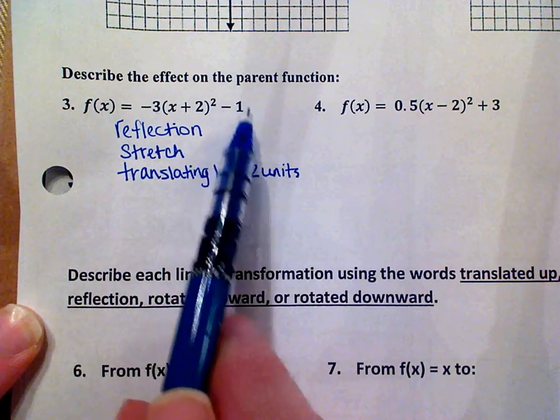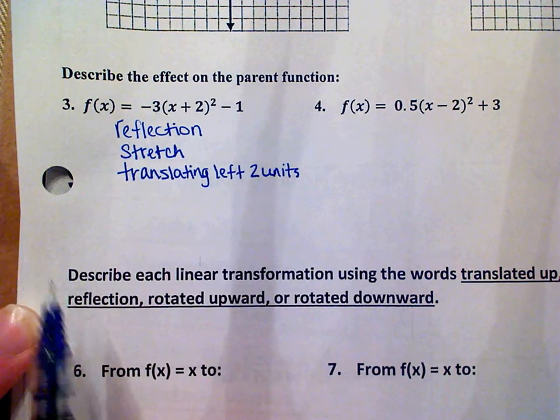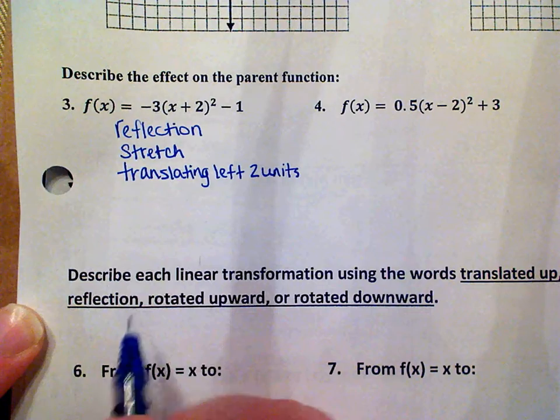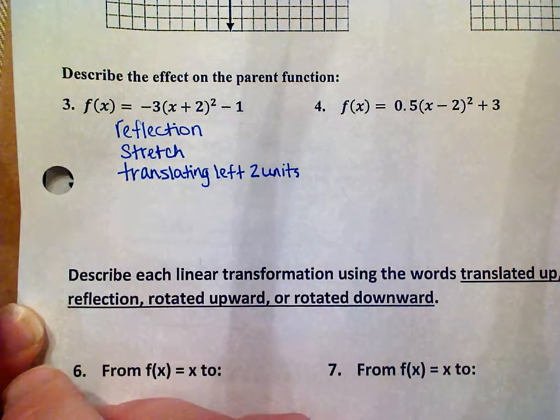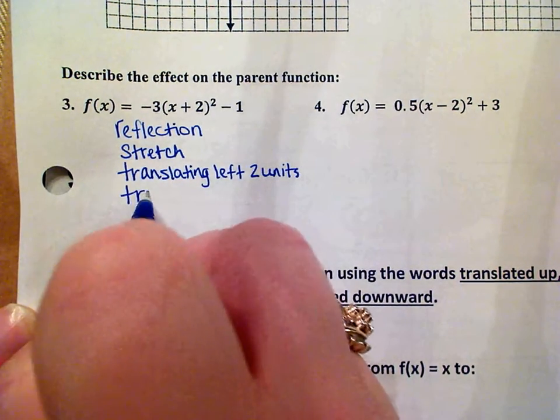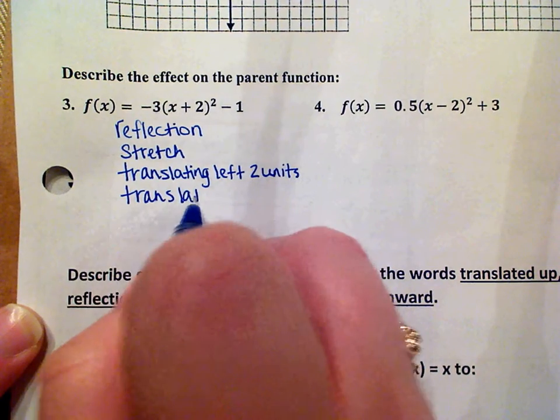And then finally the number at the end that's either added or subtracted is also a translation but that's an up and down translation. The sign tells you exactly which direction it's going so the minus one tells us we translated down one unit.